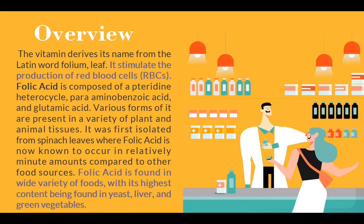Overview. The vitamin derives its name from the Latin word folium, meaning leaf. It stimulates the production of red blood cells. Folic acid is composed of a pteridine heterocycle, para-aminobenzoic acid, and glutamic acid. Various forms of it are present in a variety of plant and animal tissues. It was first isolated from spinach leaves, where folic acid is now known to occur in relatively minute amounts compared to other food sources.